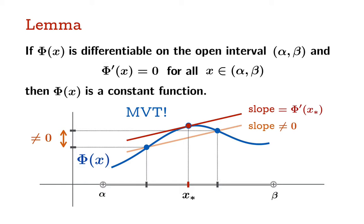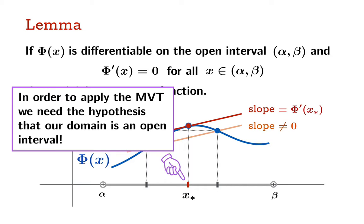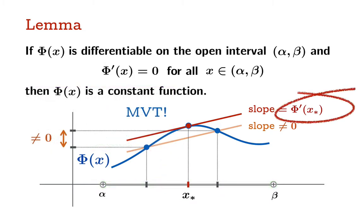Now the mean value theorem guarantees that there's an argument in between where the tangent slope equals that same secant slope. Let's take a moment to understand why the hypothesis that we started with an open interval is important here. In order to apply the mean value theorem, we need the hypothesis that our domain is an open interval, because we need to have access to all the arguments between these two arguments — we need phi to be differentiable on the interval of arguments between. But we have the no-gap guarantee: our original domain includes these two arguments, and since the original domain was an open interval, we know that all those arguments are in the domain. So we are able to apply the mean value theorem.